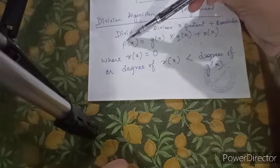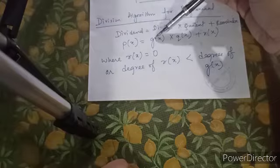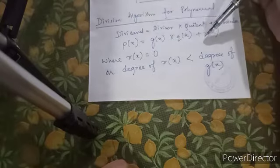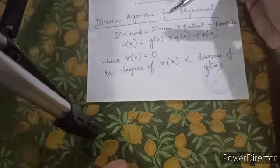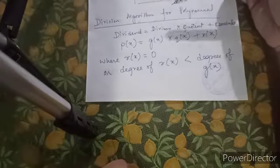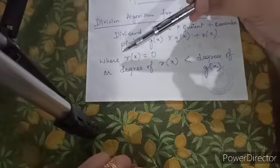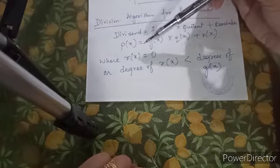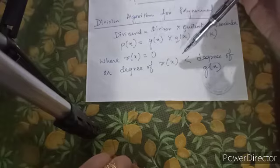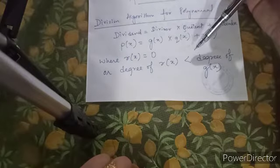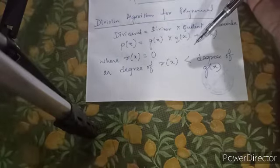So dividend is given by P(x) equals divisor G(x) times quotient Q(x) plus remainder R(x). If you are given a question to define the division algorithm, you have to write this equation and also this condition: that your remainder R(x) is 0, or the degree of R(x) should always be less than the degree of G(x).